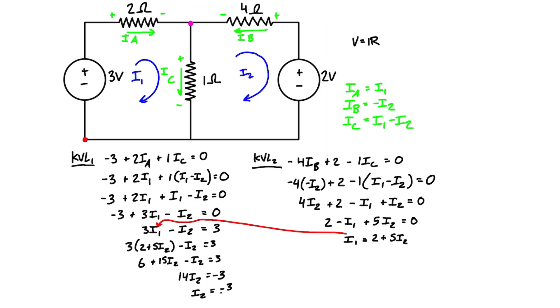We can just simplify that, that's just 6 plus 15i2 minus i2 is equal to 3. Let's give ourselves a little bit more space to work here, but we're basically just going to get 14i2 is equal to negative 3, and i2 is ultimately equal to negative 3 over 14, or it's equal to negative 0.214. That is in amps.